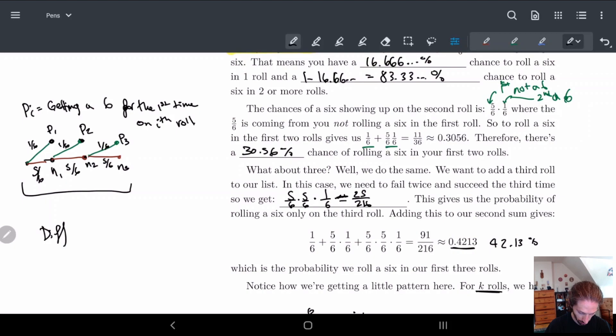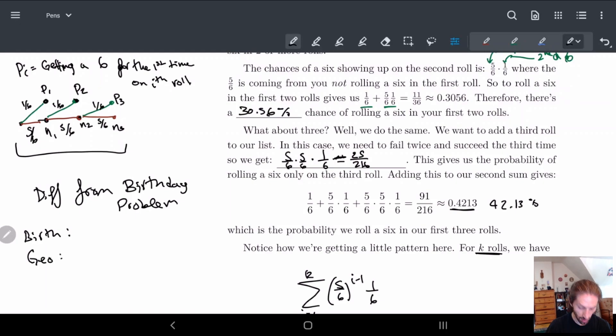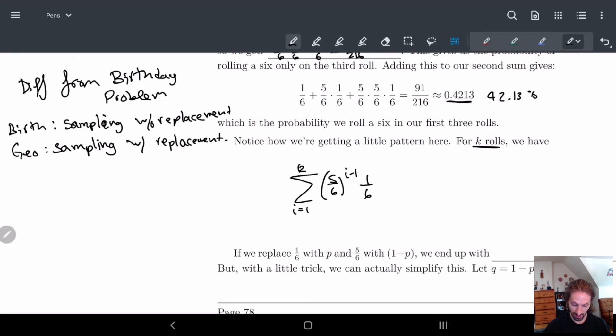So the difference here, difference from the birthday problem is, so birthday problem, I'll just say birth and then geometric for this one. Birthday problem is every time we chose someone, we never chose them again. So this one was, birthday problem is sampling without replacement in essence. Because each time we look at something, without replacement, we don't put it back into the set. Whereas a geometric distribution requires sampling with replacement. With replacement. And that's, I think, one of the things that a lot of people did wrong for that problem, is they tried to do sampling with replacement when it was a sampling without replacement problem on the exam.